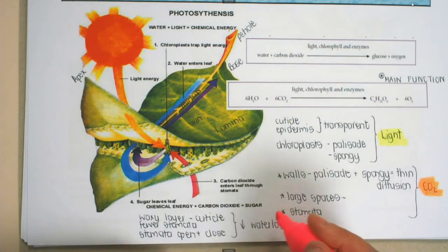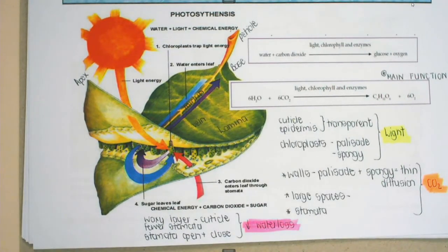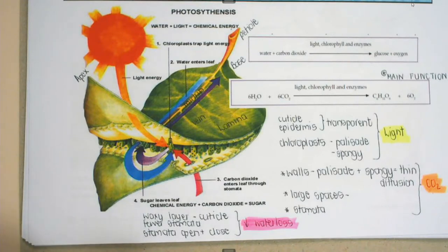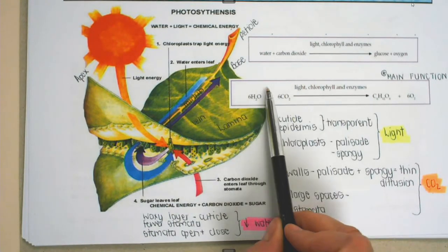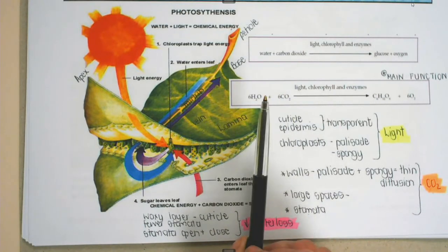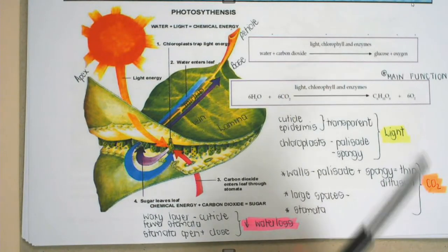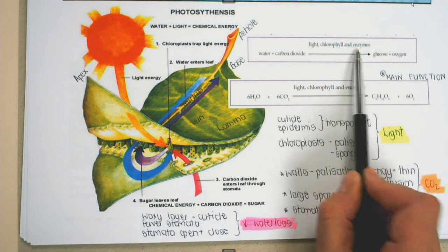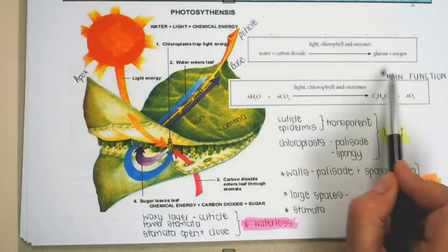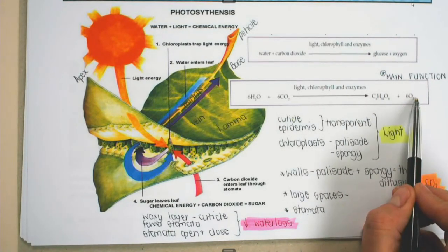The last adaptation of the leaf I want you to remember is to reduce water loss. We don't want the leaf to lose water and wilt. The waxy layer on top of the leaf is a certain thickness because it prevents water from evaporating. Fewer stomata means less water evaporating, and when stomata are closed there will be less water lost. The chemical reaction is very important to remember: water plus carbon dioxide, using light, chlorophyll, and enzymes, produces glucose and oxygen. The main function is to produce food and oxygen.